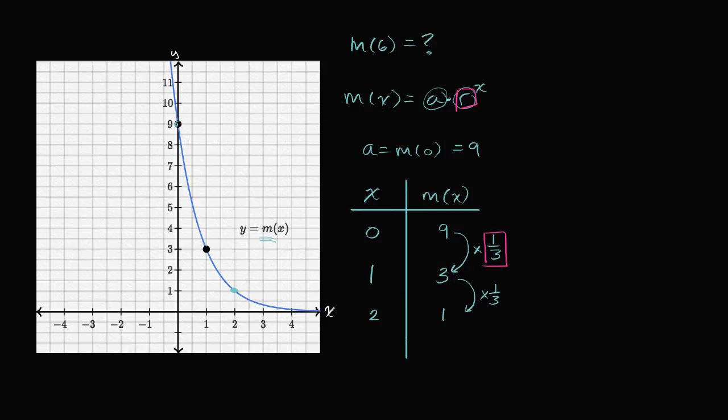So m of x, we can write it as m of x is going to be equal to our initial value, a, which we already figured out is equal to nine. So it's going to be nine times our common ratio, one-third to the x-th power. So I was able to figure out the formula for m of x, but that's not what I wanted. I just wanted to figure out what m of six is going to be.